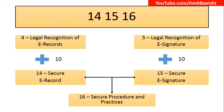Now, sections 14, 15, and 16. Before moving on, let me recall what we covered in the second part: sections 4 and 5 — about records and signatures. Section 4 was legal recognition of electronic records, and section 5 was legal recognition of electronic signatures. We also had section 3A for electronic signatures and section 10, which is the power of the central government to make rules with regard to electronic signatures. Now, if we add 10 to 4, we get 14 — secure e-record. And 5 plus 10 equals 15 — secure e-signature.